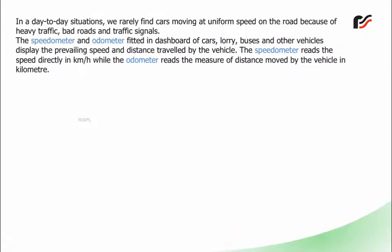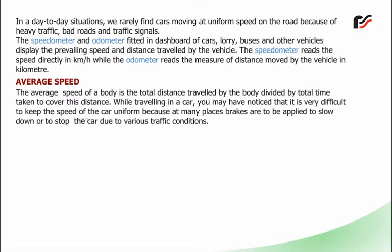In day-to-day situations, we rarely find cars moving at uniform speed on the road because of heavy traffic, bad roads and traffic signals. The speedometer and odometer fitted in the dashboard of cars, lorries, buses and other vehicles display the prevailing speed and distance travelled. The speedometer reads speed directly in km/h while the odometer reads the distance moved by the vehicle in kilometres.